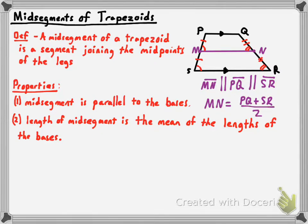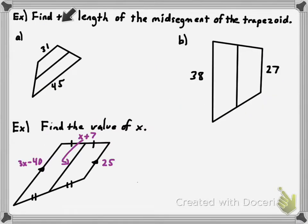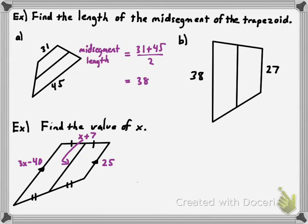Let's put that into practice — specifically the length formula. Whenever you know the lengths of the bases and want to find the length of the midsegment, all you have to do is add those up and divide by two. So 31 plus 45 is 76, divided by 2 is 38. For the other example, the bases are 38 and 27; their sum is 65, and 65 divided by 2 is 32.5.